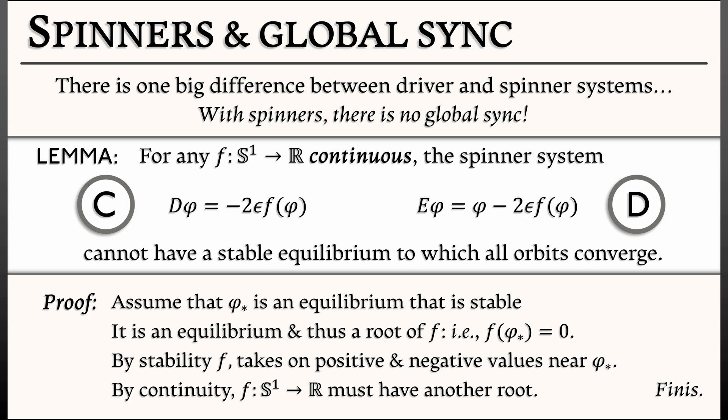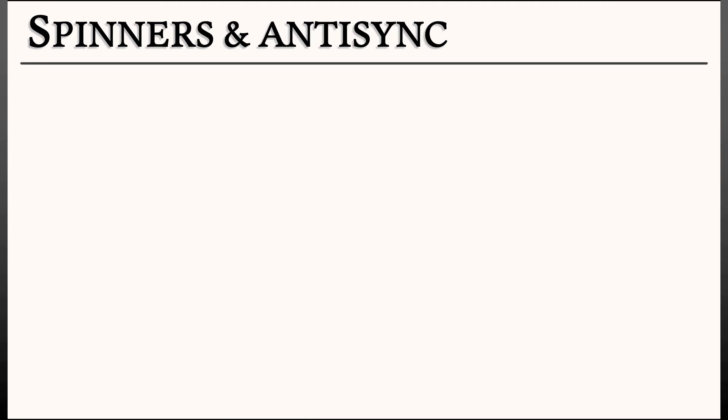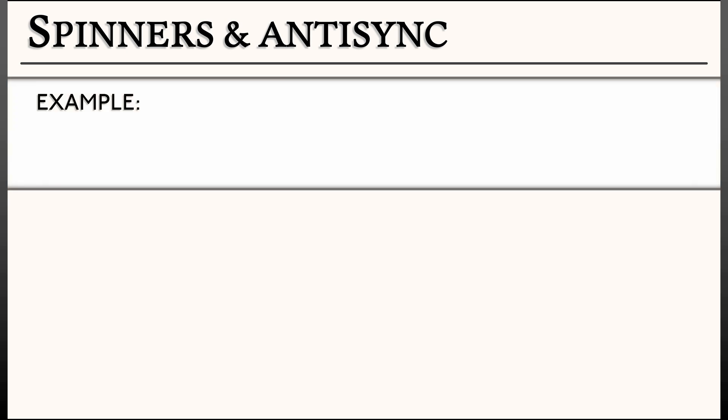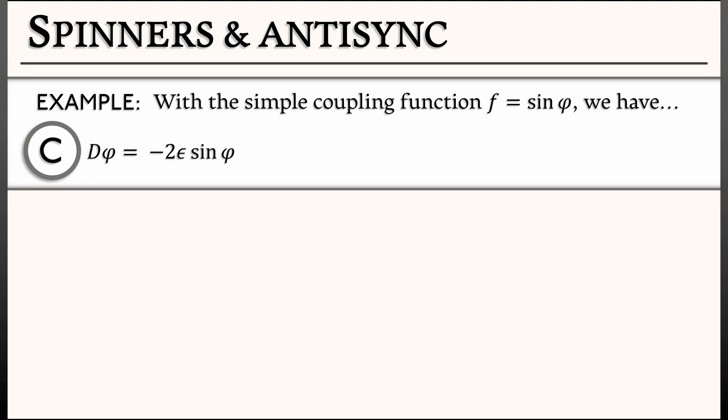Maybe it would be worthwhile to look at a specific example. Let's think about the simplest coupling function we can have on the circle: f = sin φ. With that coupling function, in continuous time, we have d φ = -2ε sin φ. In discrete time, we have E φ = φ - 2ε sin φ.